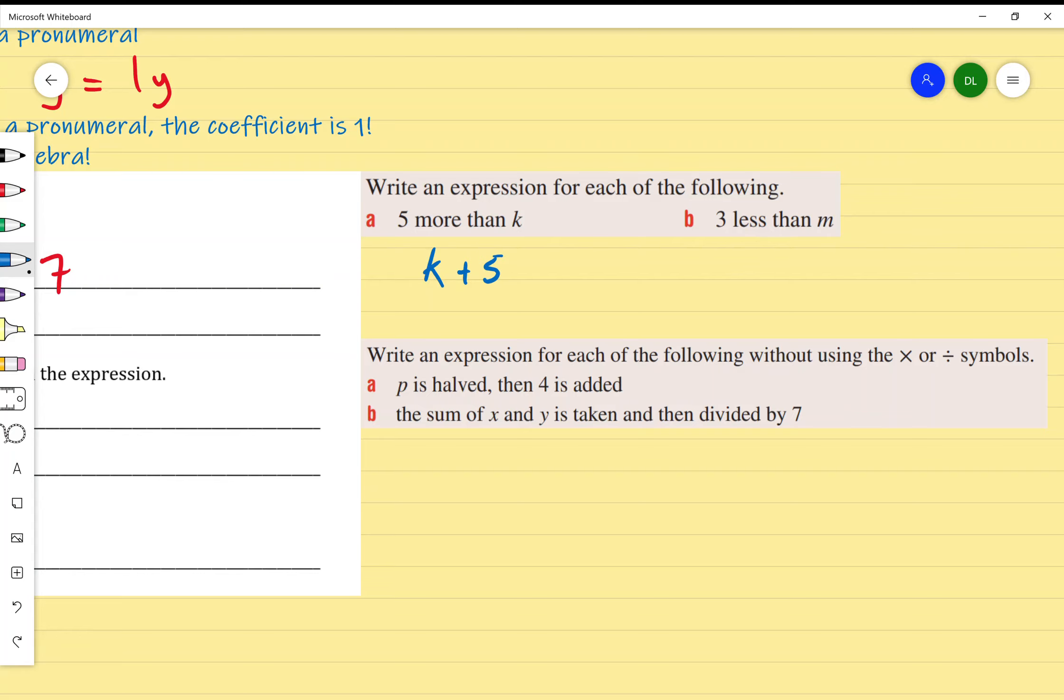Another example: 3 less than m. I know m is a certain value, it could be any number, it's a variable. Let's use 10 as an example. 3 less than 10 would be 10 minus 3. Once again, I replace the 10, I don't write 10, I write m. So m minus 3. This is another way of writing 3 less than m.